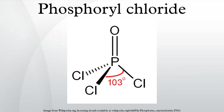If POCl3 is heated with an excess of a phenol in the presence of a Lewis acid catalyst such as magnesium chloride, a triaryl phosphate ester such as triphenyl phosphate is formed. POCl3 can also act as a Lewis base, forming adducts with a variety of Lewis acids such as titanium tetrachloride: Cl3P=O + TiCl4 → Cl3P(O)TiCl4. The aluminium chloride adduct is quite stable, and so POCl3 can be used to remove AlCl3 completely from reaction mixtures at the end of a Friedel–Crafts reaction.